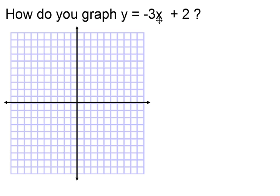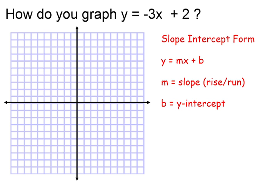y equals negative 3x plus 2 represents a linear equation in slope-intercept form. This tells us that m, or the slope, is the number right next to the x. Therefore, our slope here is negative 3.